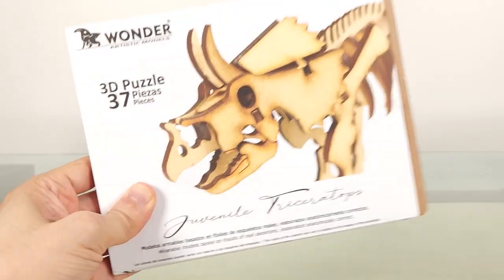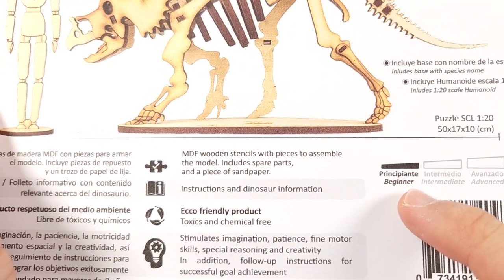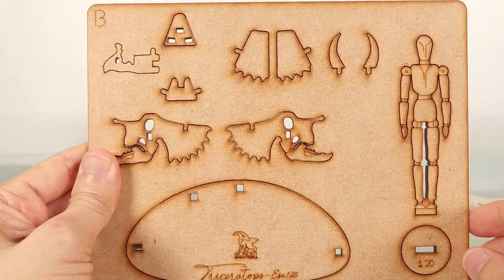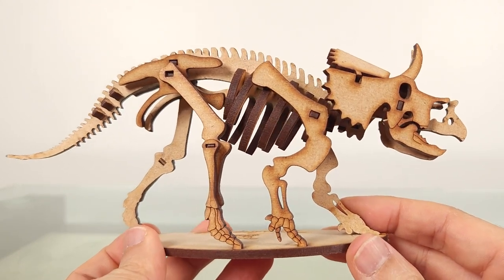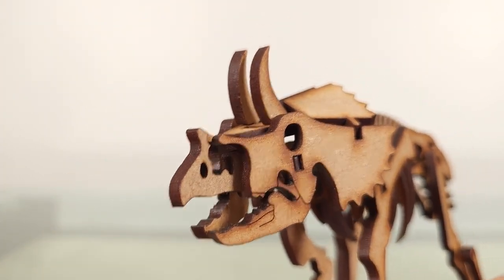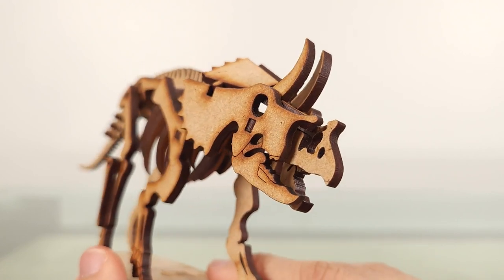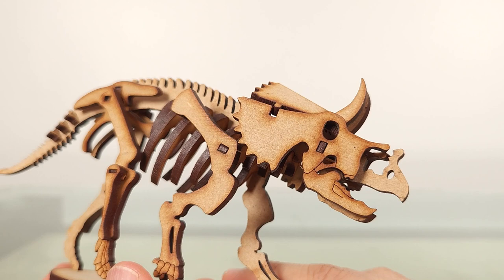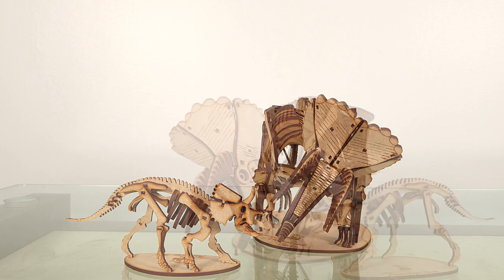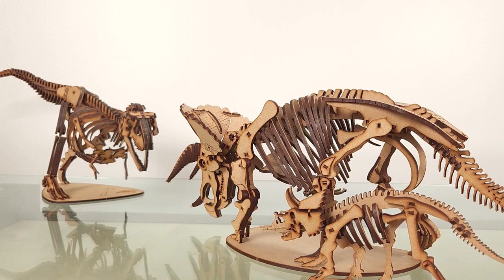And by the way, here's a little bonus, the Wonder Artistic Model's juvenile triceratops. You can see that this is a much simpler model. In fact, it's only 37 pieces on two smaller templates, and well suited for newcomers to the hobby or children. But they go well together, and I always like dioramas. And here it looks like the adult is protecting the baby from a would-be predator.